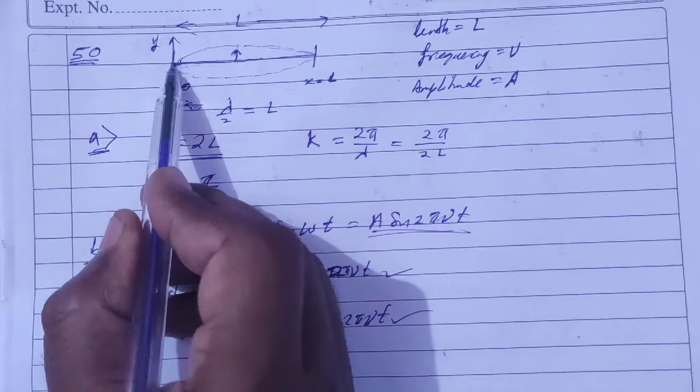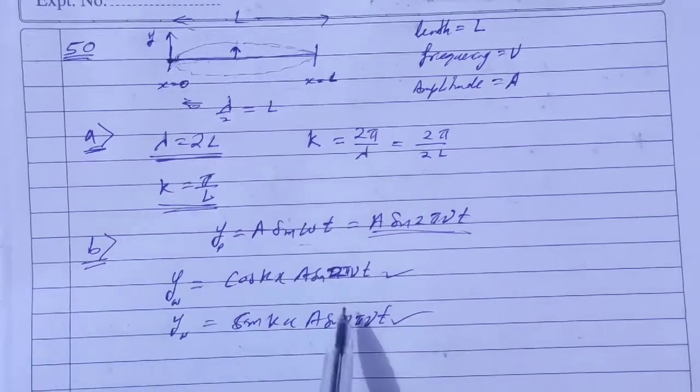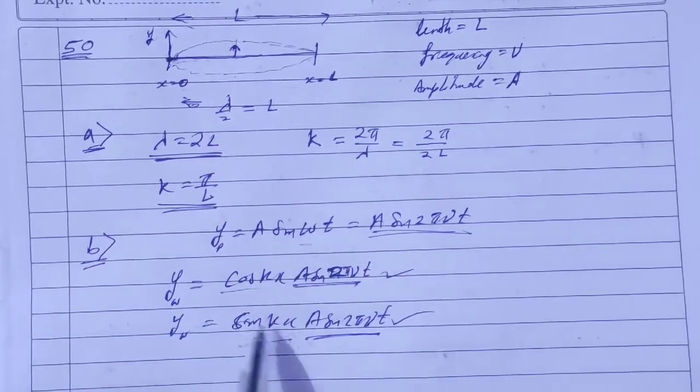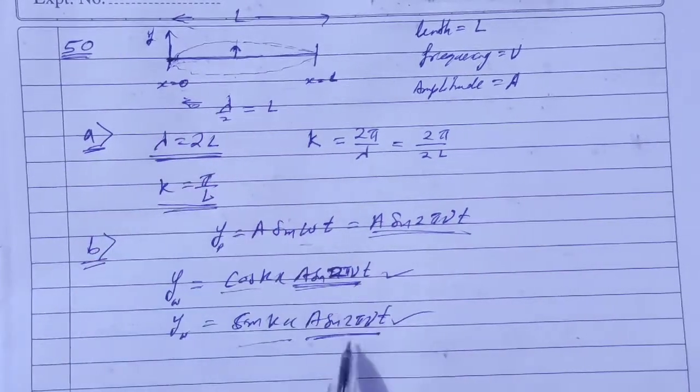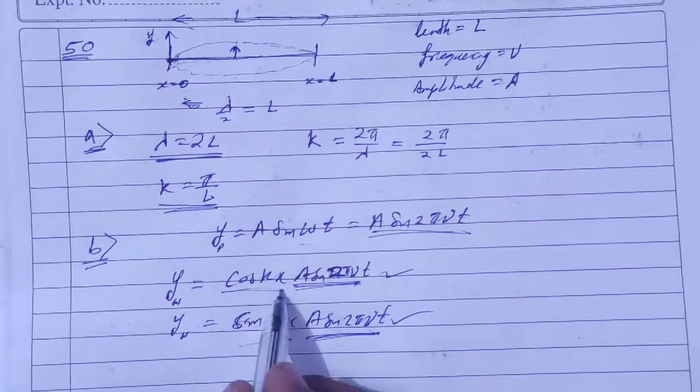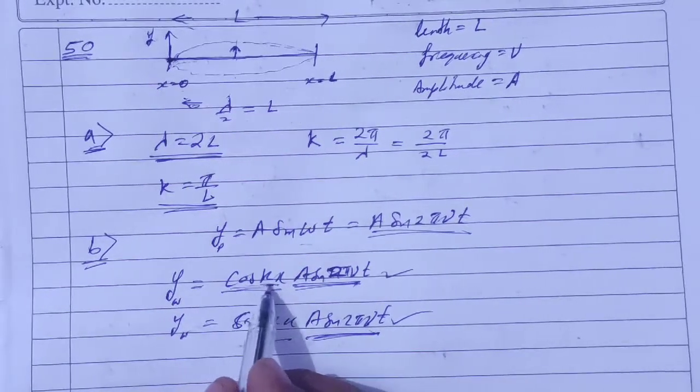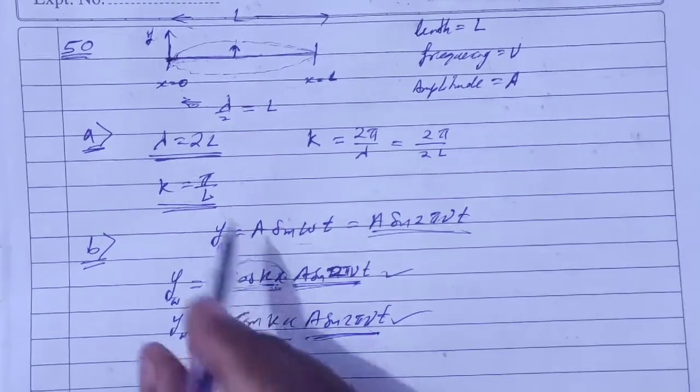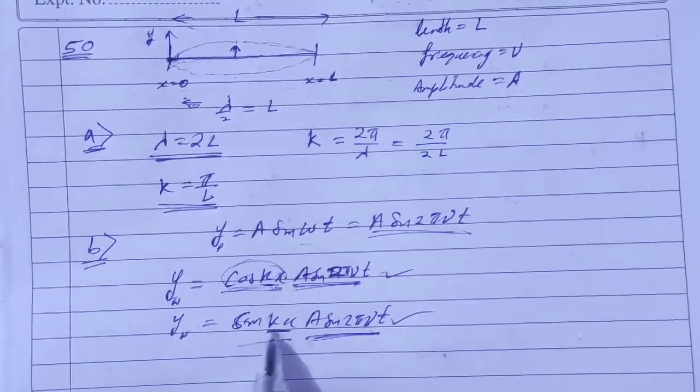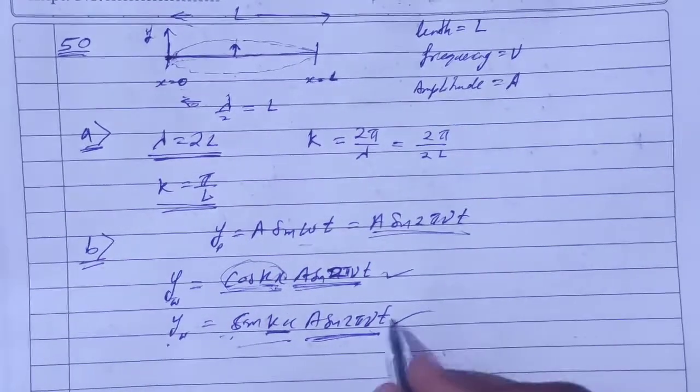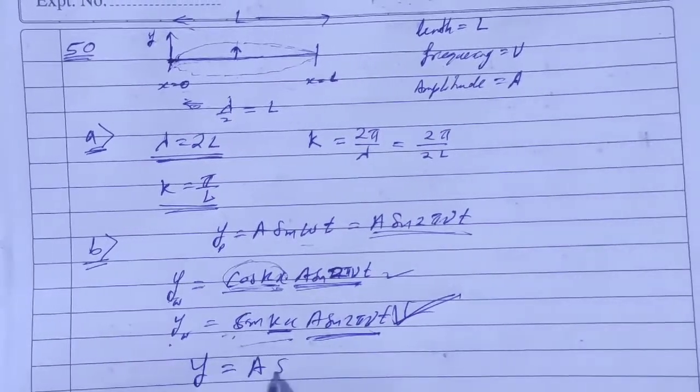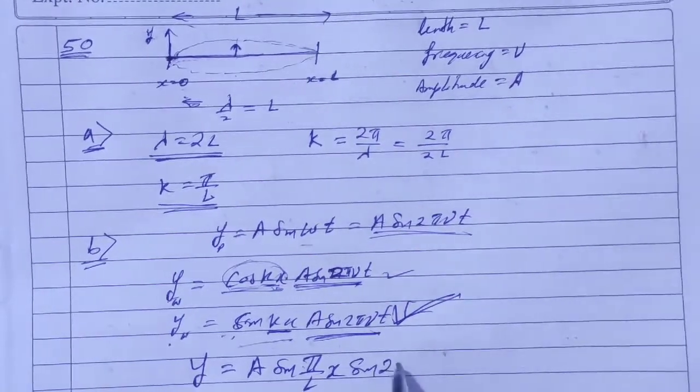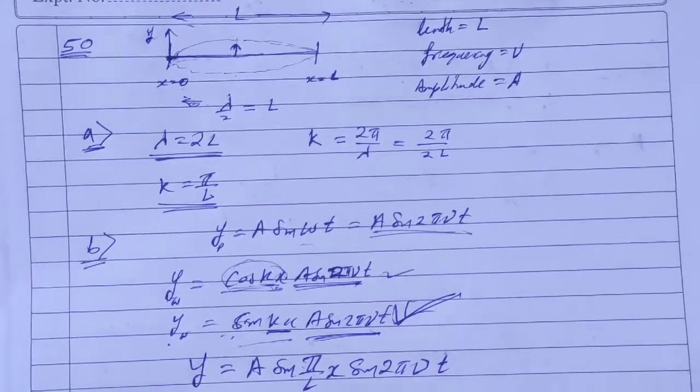Now this sine is correct. Look, we know that x equals 0, there is a node, and x equals L, there is a node. At x equals 0, y equals 0. This term satisfies that. If we use cosine, cos 0 equals 1, and y would be positive, which is wrong. Because x equals 0 is a node, sine 0 equals 0, so y equals 0. Here the sine term is correct.